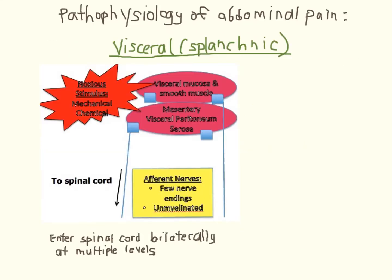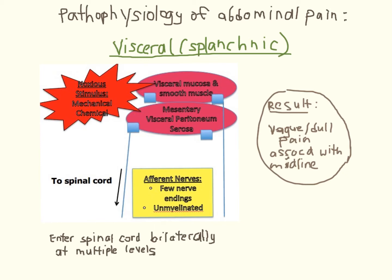This first part about the localization and nature of abdominal pain should be a refresher. Recall that visceral pain arises from the stimulation of mechanical and chemoreceptors, primarily on visceral mucosa and smooth muscle. Because the afferent nerves in this pathway have fewer endings, are unmyelinated, and enter the spinal cord bilaterally at multiple levels, visceral pain is typically dull, poorly localized, and around the midline.